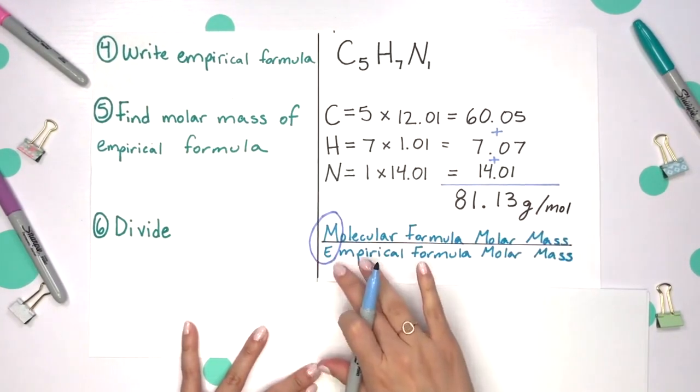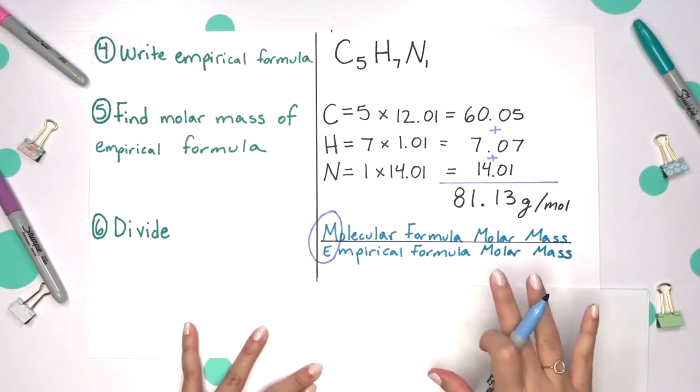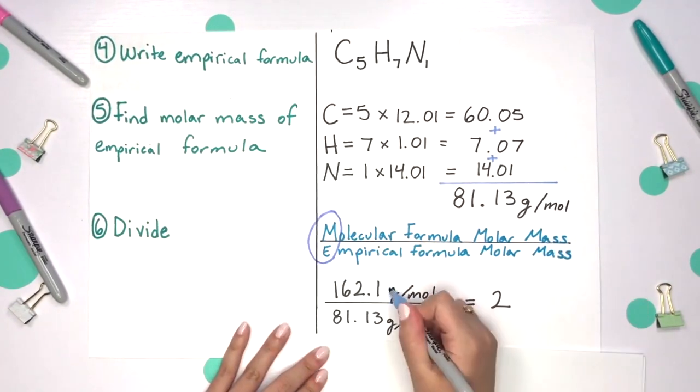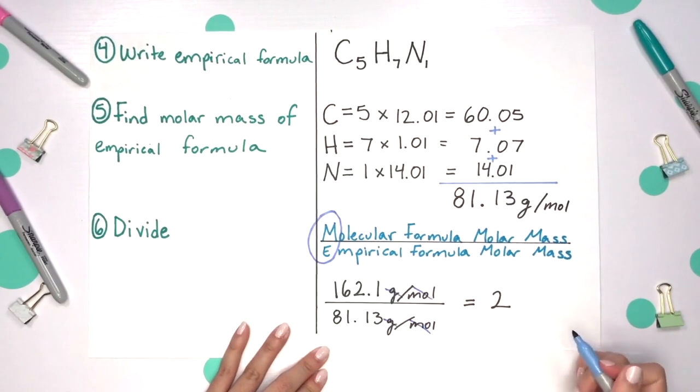Molecular formula on top, empirical formula's molar mass on the bottom. So we'll divide those two values in our case, and these grams per mole will cancel, and you get a whole number of 2.